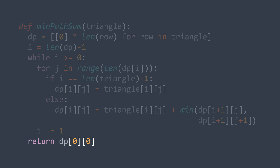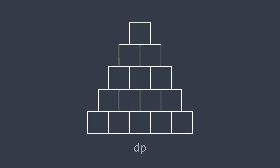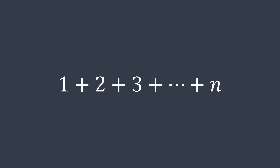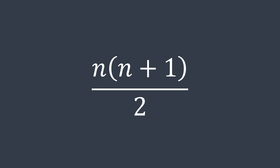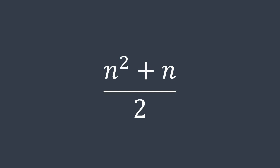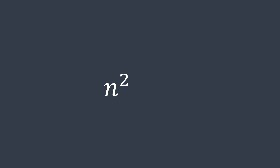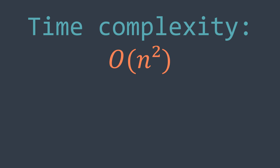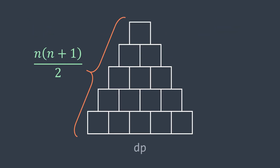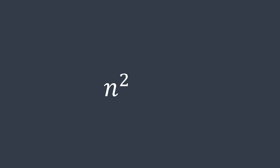Before analyzing complexity, note that dp has 1 cell on the first row, 2 on the second, 3 on the third, and so on — a total of 1+2+3+...+n, which equals n*(n+1)/2. For time complexity, we are filling dp which has n*(n+1)/2 cells; simplifying, that's (n²+n)/2, and removing smaller terms gives O(n²). By the same logic, the space complexity is also O(n²) for the dp array.